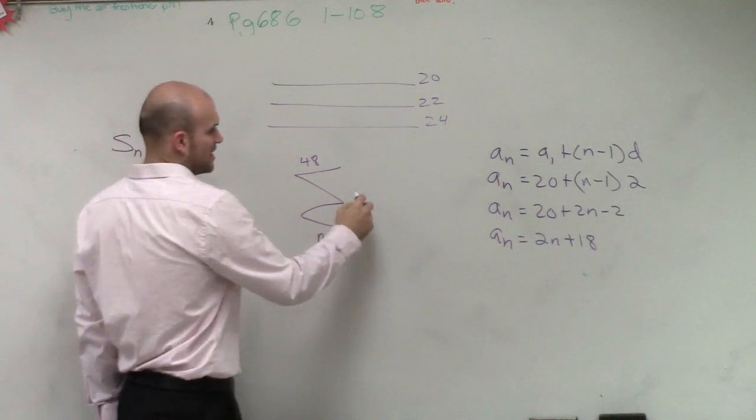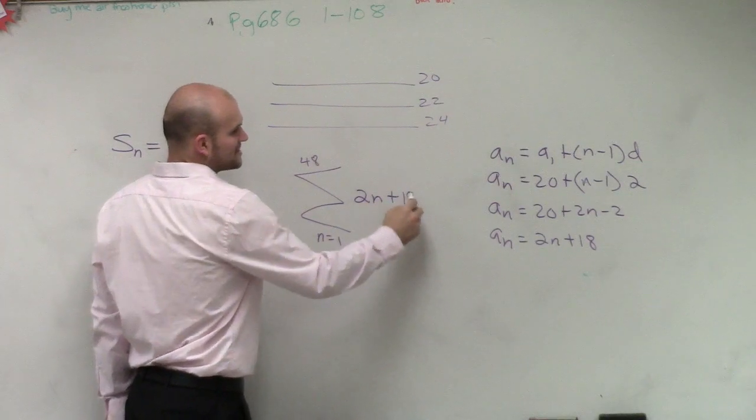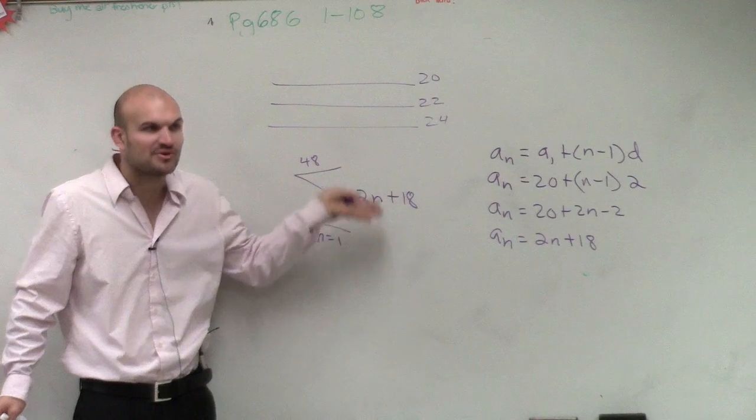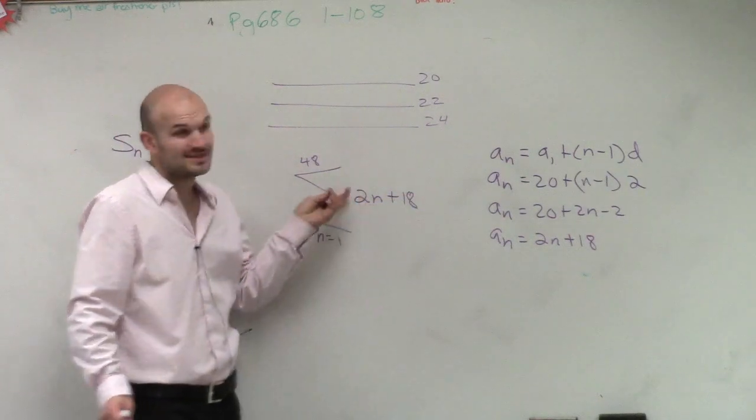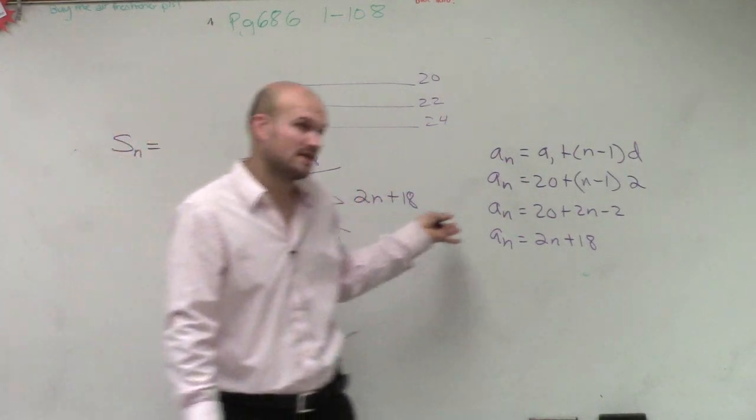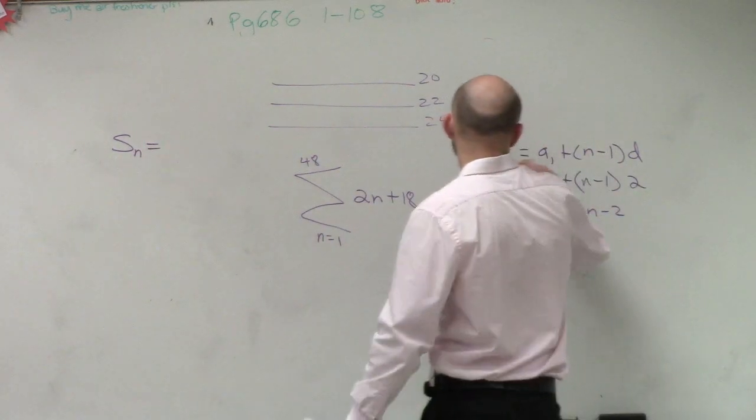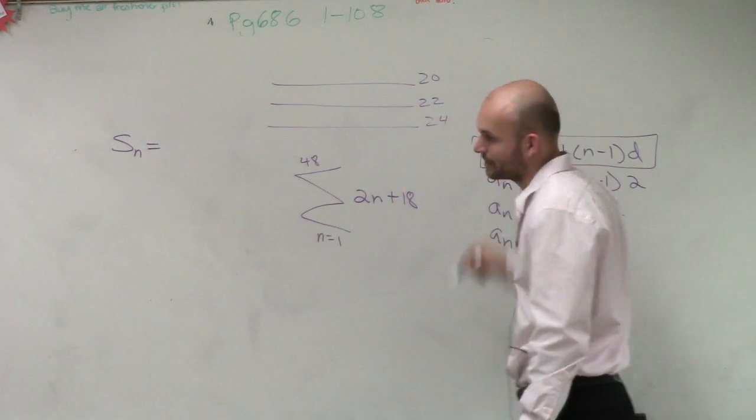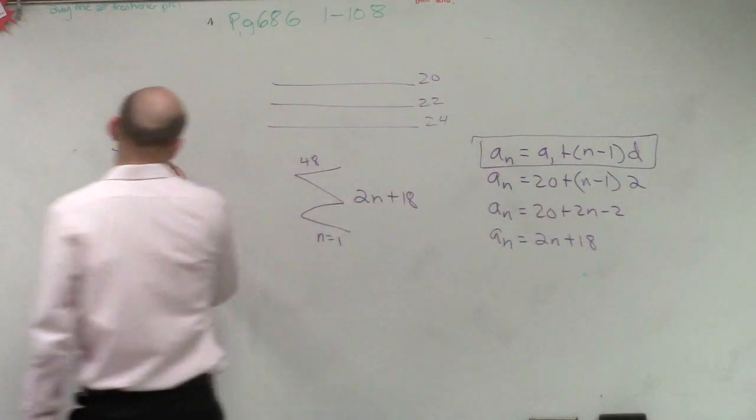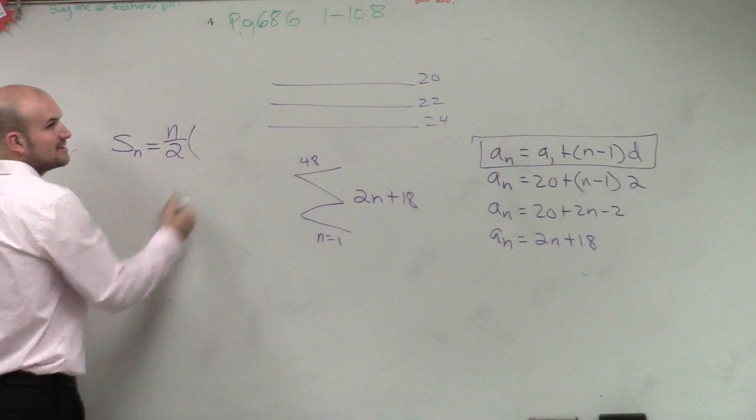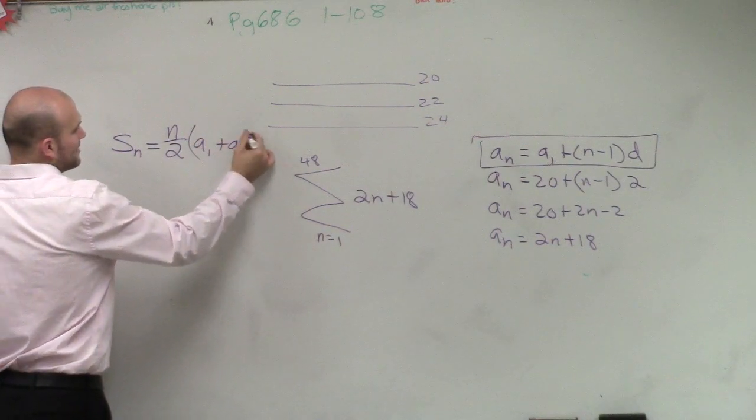You guys could do this for all 48 terms, right? Plug in 1, plug in 2, plug in 3, plug in 4. That's going to take you a very long time to go all the way up to 48. So there is another formula that I'm kind of introducing to you right here. The other formula is s of n is n divided by 2 times a sub 1 plus a sub n.